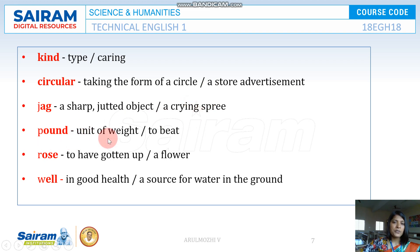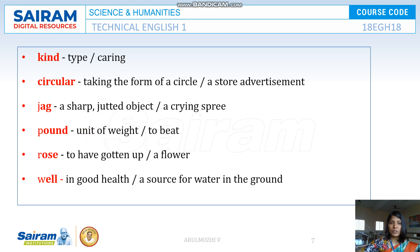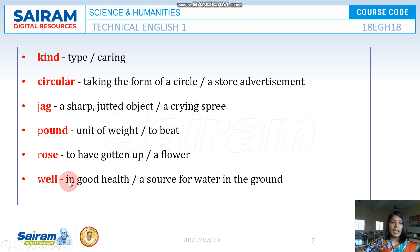POUND can mean a unit of weight or to beat someone. For example, 'I need a pound of flesh' means a weight of flesh, and 'he pounded on her' means to beat. ROSE can mean to get up — as in 'he rose up from the bed' — or it refers to the flower, as in 'he gave her a rose.'